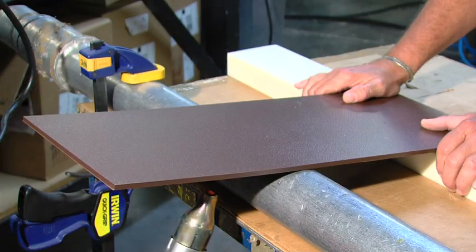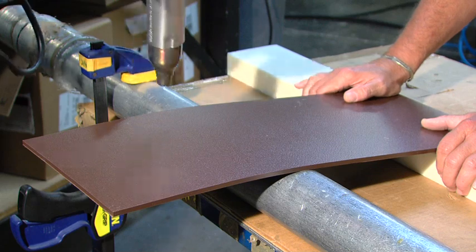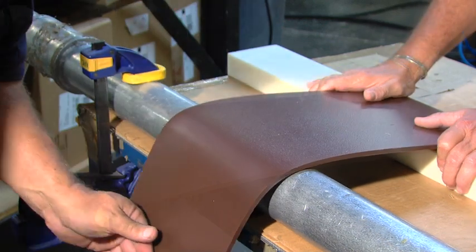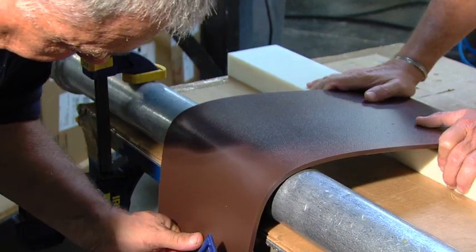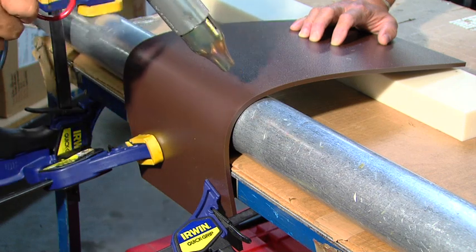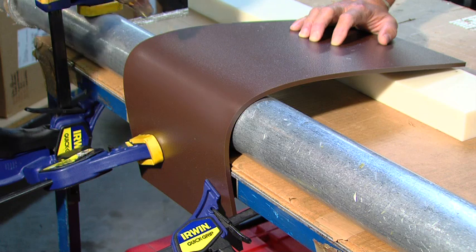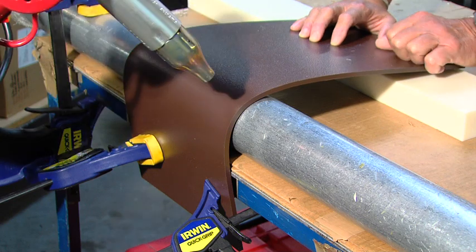Forming a radius can also be done by using a heat gun. Use a back and forth motion across the length of the sheet, both top and bottom, until the Starboard ST is soft enough to start bending. Do not get the heat too close to the material, as blistering may occur. And be aware, the thicker the material, the longer it will take to form a desired radius.